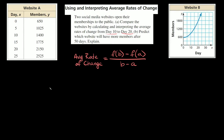Let's start with website A. The average rate of change formula is equal to F of B minus F of A, all over B minus A. These two values up top are basically your Y values, and down here these are your X values.